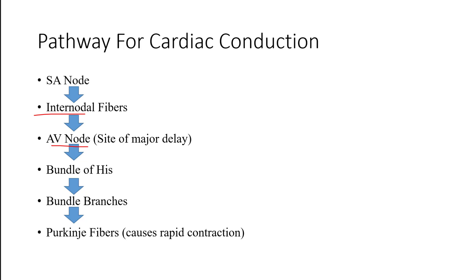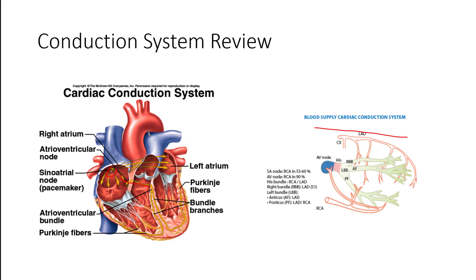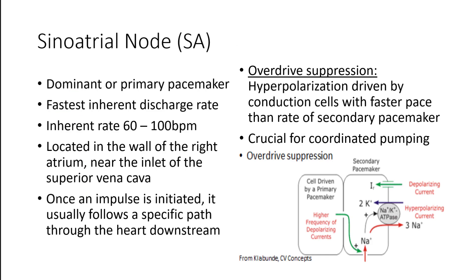Each location has certain important things that happen along the way, but this order happens from the very first beat to the very last beat, and it's really important for this order to be maintained. So again: SA node, AV node, into our bundle of His, then to our right and left bundle branches, and then our Purkinje fibers throughout the ventricles.